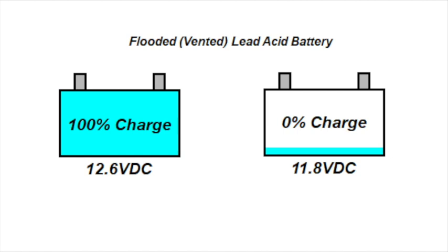So between charged and discharged, we have less than a volt change in the battery. Now other batteries, such as lithium, AGM and so on, have similar voltages, but we'll just use the lead acid battery for the example.